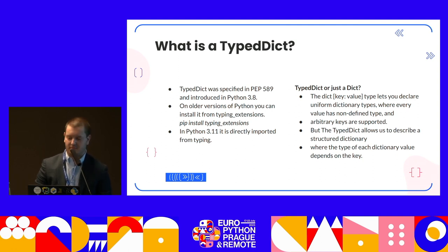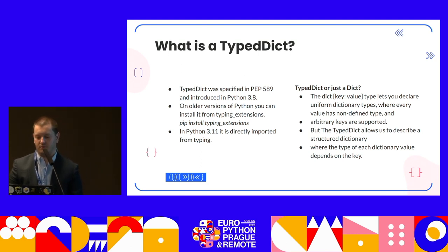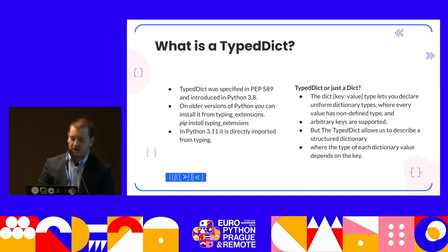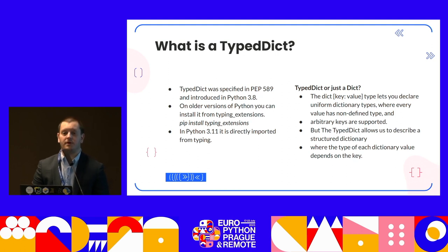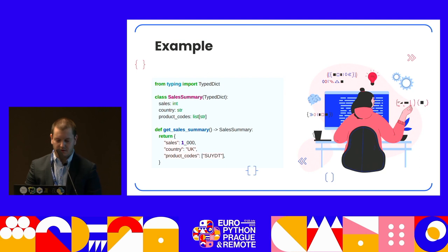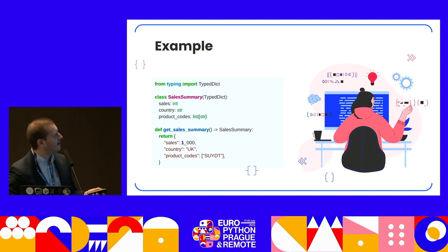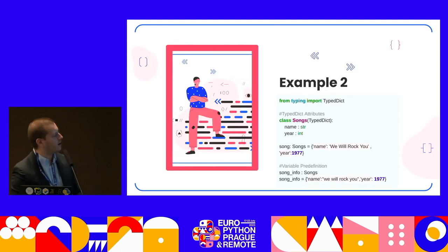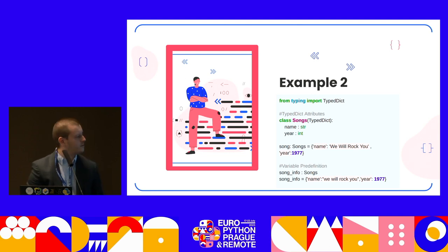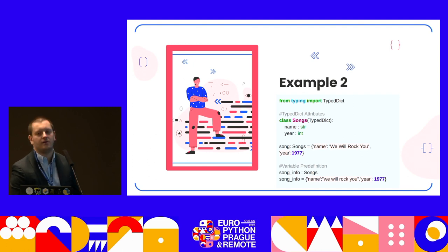TypedDict versus just dict is a question asked all over the web. The regular dict key and value types let you declare uniform dictionary types where every variable has a non-defined type and arbitrary keys are supported. But TypedDict allows you to describe a structured dictionary where the type of a dictionary variable depends on the key. If we have a class and method and you change the values — for example, instead of a string, we have an integer — the IDE will warn you that something is wrong and a string is expected.